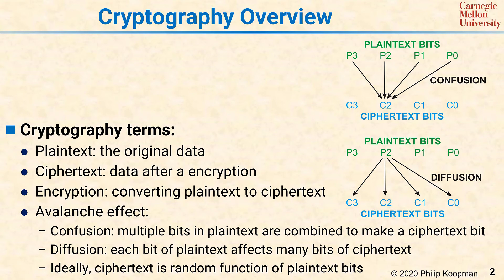In other words, good encryption looks like a random number generator that takes all the input plain text bits in, produces a pseudorandom number as an output in the form of ciphertext, and unless you know some secret, you're not able to reverse the process to get from ciphertext back to plain text.